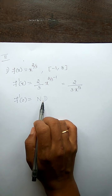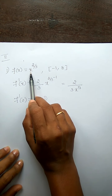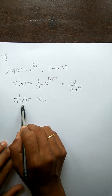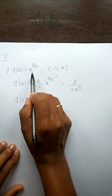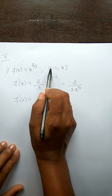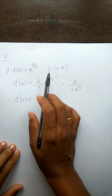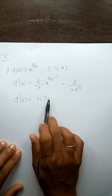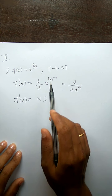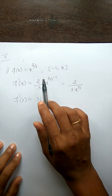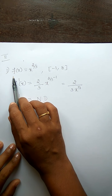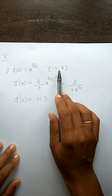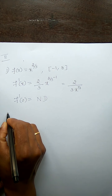f'(0) is not defined means this function is not differentiable when x = 0. f(x) = x^(2/3) is not differentiable at x = 0, so that fails the hypothesis of the mean value theorem. Therefore, f(x) does not satisfy the hypothesis of the mean value theorem on the given interval because f is not differentiable at the interior domain point x = 0.